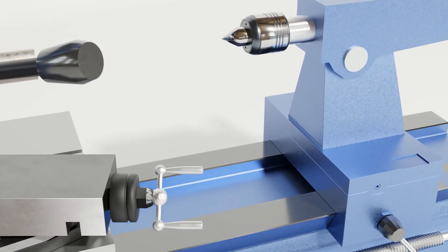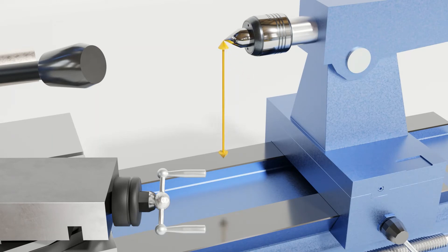Alternatively, you can calculate it by measuring the distance from the top of the bed to the centerline of the turning machine and doubling that value.